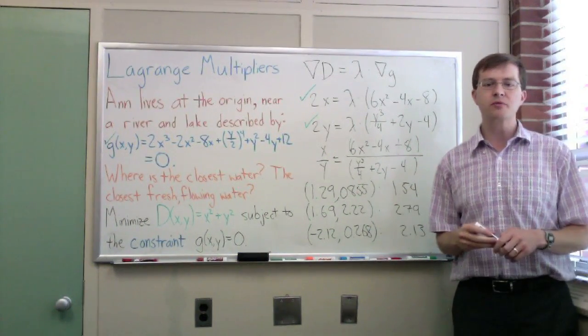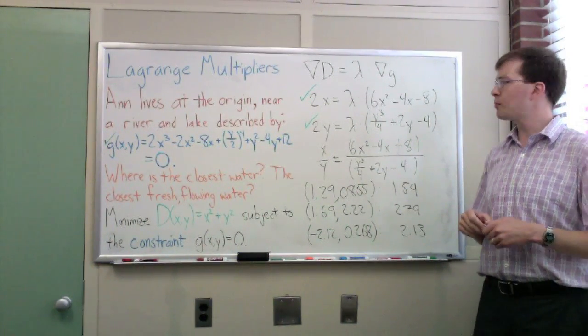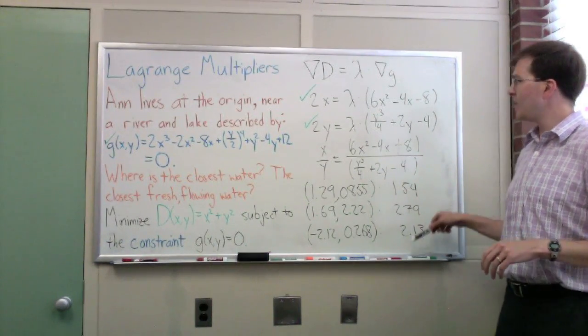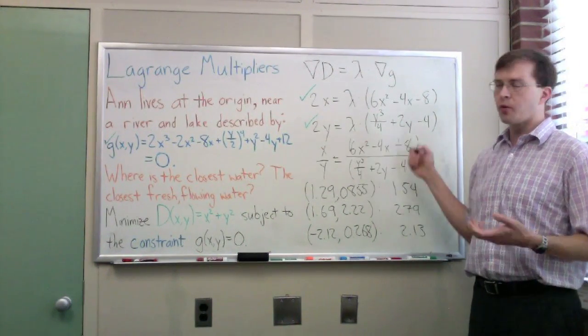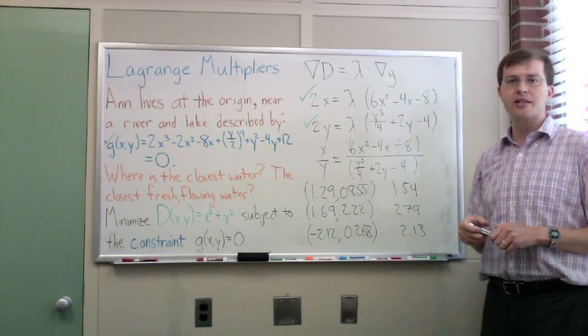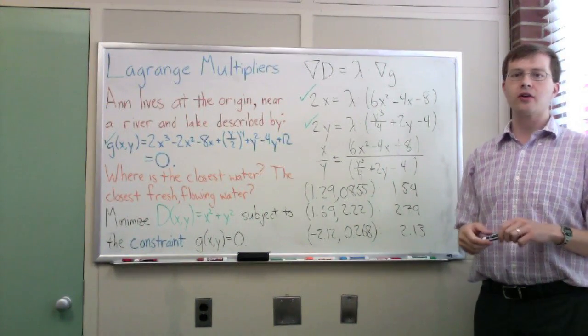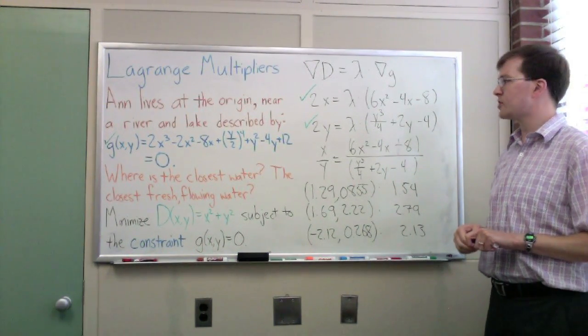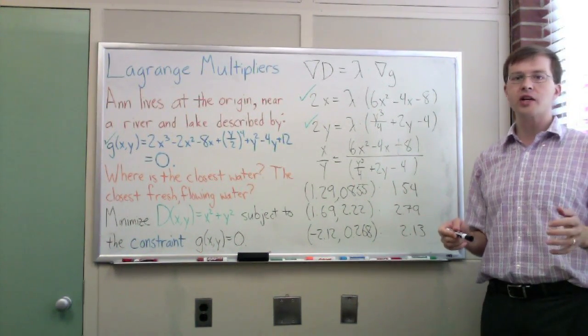So that's how Lagrange multipliers can give us an answer to a problem like this. We get these answers, and it's all set up this way. Three equations and three unknowns comes out nicely. Just for the record, you could, if you really wanted to, rather than doing Lagrange multipliers here,